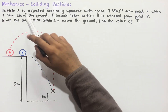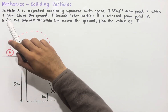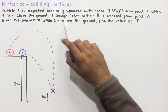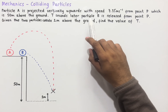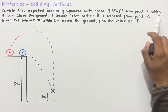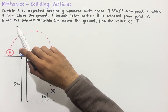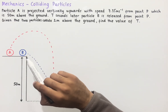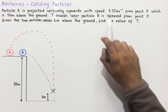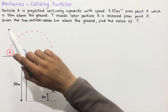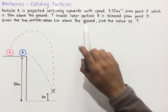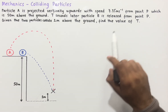Let's look at colliding particles in mechanics. The question says: particle A is projected vertically upwards with speed 7.35 meters per second from point P, which is 50 meters above the ground. T seconds later, particle B is released from point P. Given that the two particles collide one meter above the ground, find the value of T.